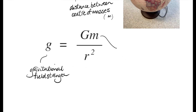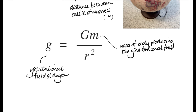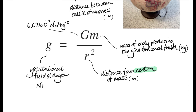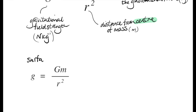In fact, you can work out the gravitational field strength of any mass that's producing a gravitational field at any distance from the centre of the mass. And big G in all these equations is Newton's universal gravitational constant — that's 6.67 times 10 to the minus 11.